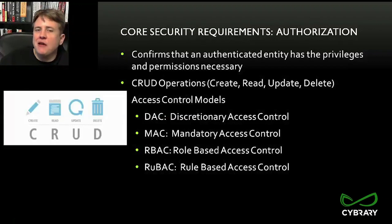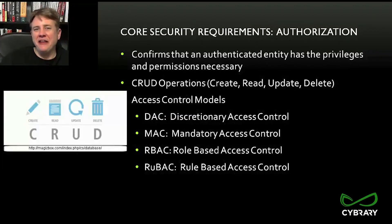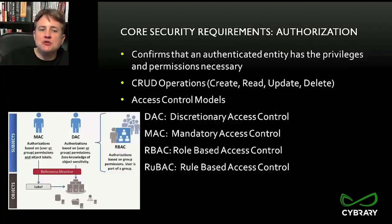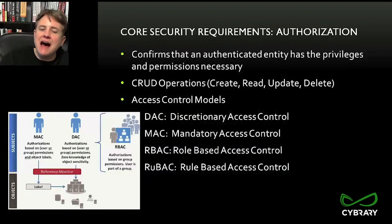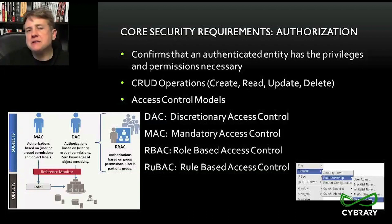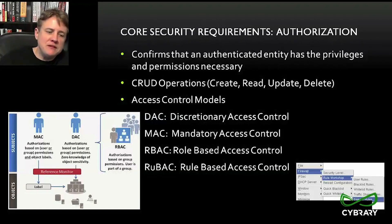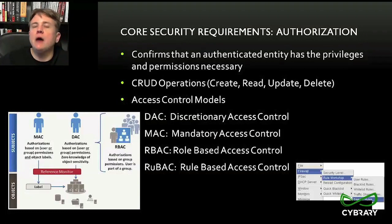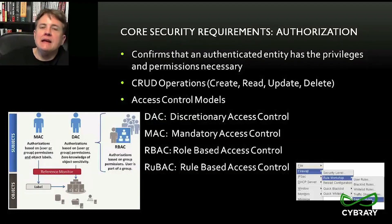A useful way to think about permissions is the CRUD acronym: Create, Read, Update, and Delete. Based on job requirements and role within the organization, users should have just the bare minimum permissions. We've discussed access control models: DAC, MAC, and RBAC (Role-Based Access Control). One model not previously mentioned is RUBAC — rules-based access control, used on firewalls or filters. Rules-based systems follow if-then logic: if traffic is coming from the 10-network, then allow it; if from another network, then deny it. This controls access and requires authorization before a subject can access an object.